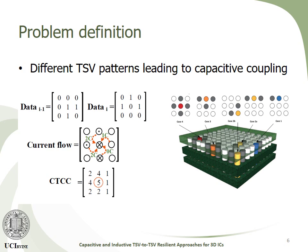Different data inputs lead to different capacitive coupling effects on each TSV. For a TSV with four aggressor neighbors, this effect can go up to 8C in our categorization. Assuming the circle with a dot indicates upward current flow and the circle with a cross indicates reverse current flow, in this example the TSV in the center would be impacted by 5C capacitive coupling in total.